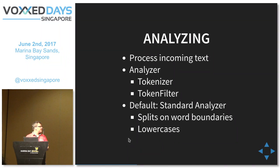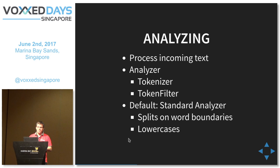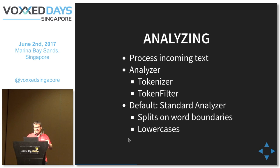The way to build this index is during the so-called analyzing process, which takes the incoming text and splits it into terms and tokens and puts them in the index. This is application specific, so you might want to configure it. The analyzing process works by using an analyzer, which consists of a tokenizer that splits the text into words, and then one or more token filters that do processing — for example, lower casing. The default is the standard analyzer, which splits on word boundaries for western languages — whitespace, punctuation and things like that — and lower cases the terms.